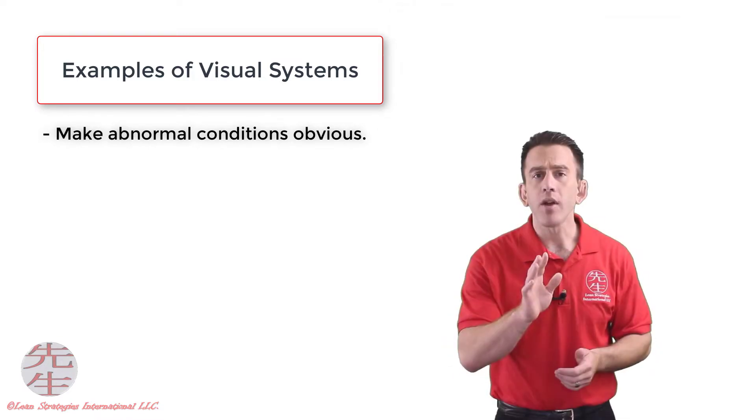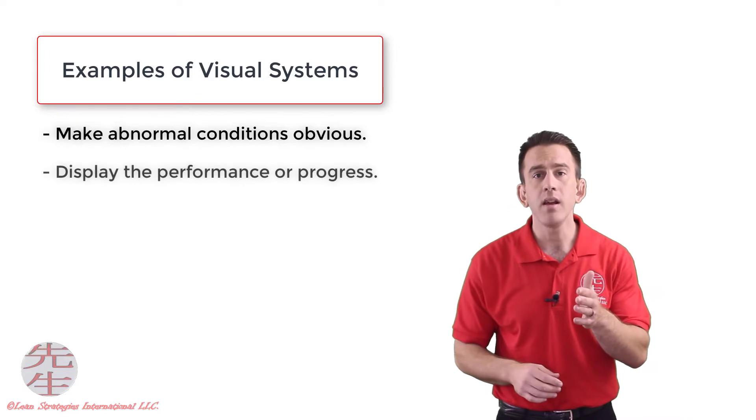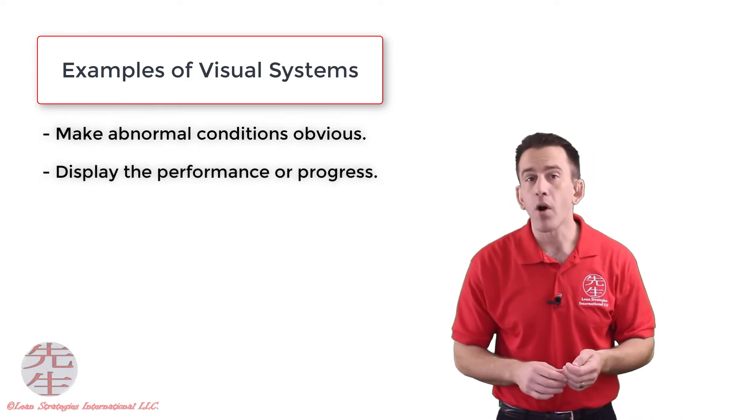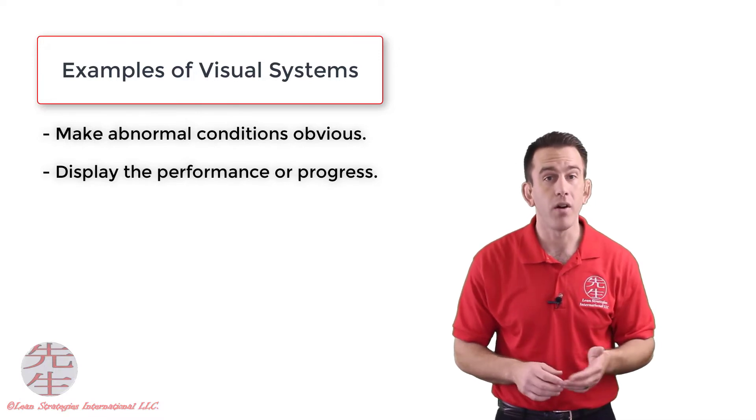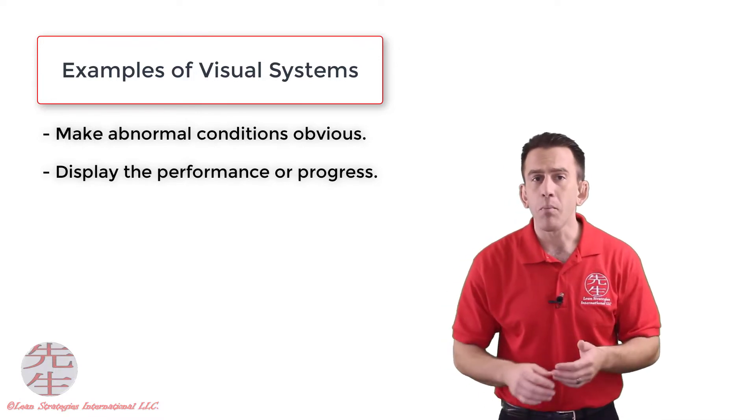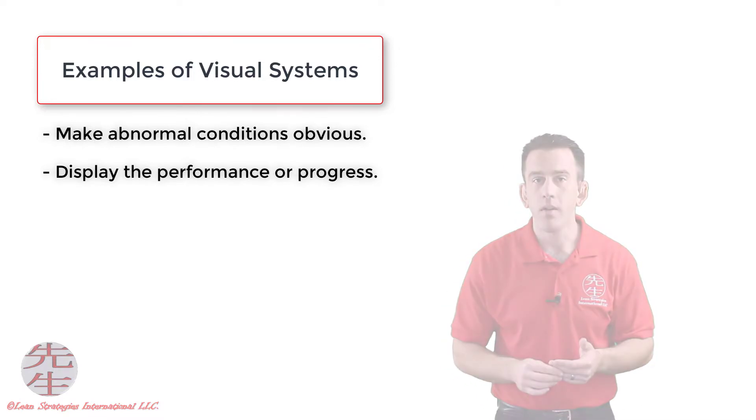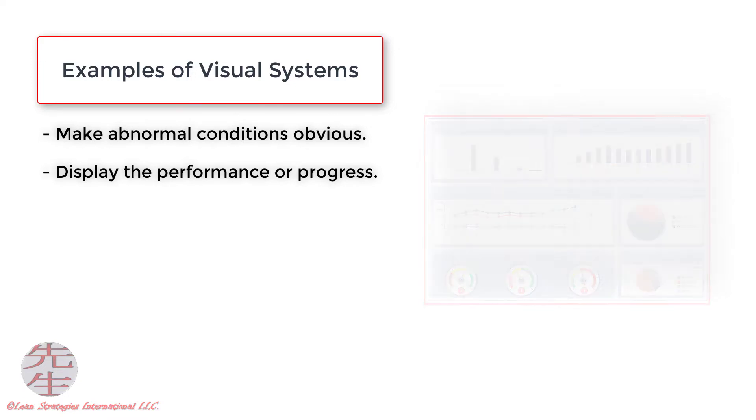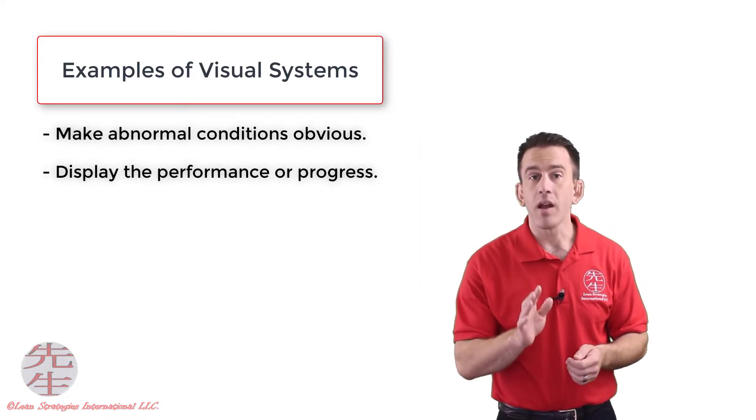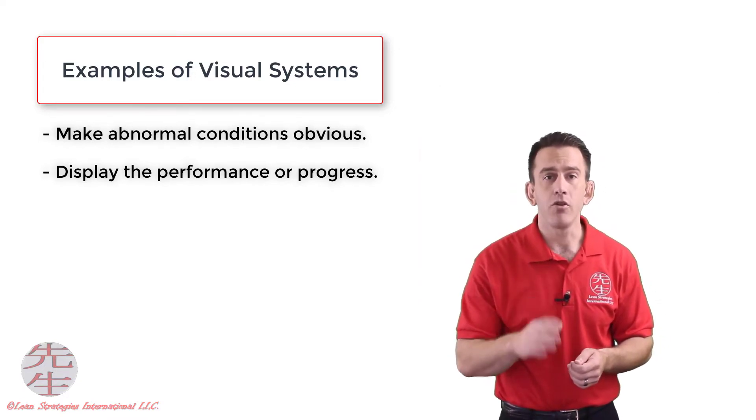Another type of visual helps us to clearly see the performance or progress of a process, activity, or work effort. Here is a great example of this type of visual. This dashboard clearly shows how the process is performing and can quickly help workers see whether their performance is on track or not. This type of visual is an example of a visual management system.